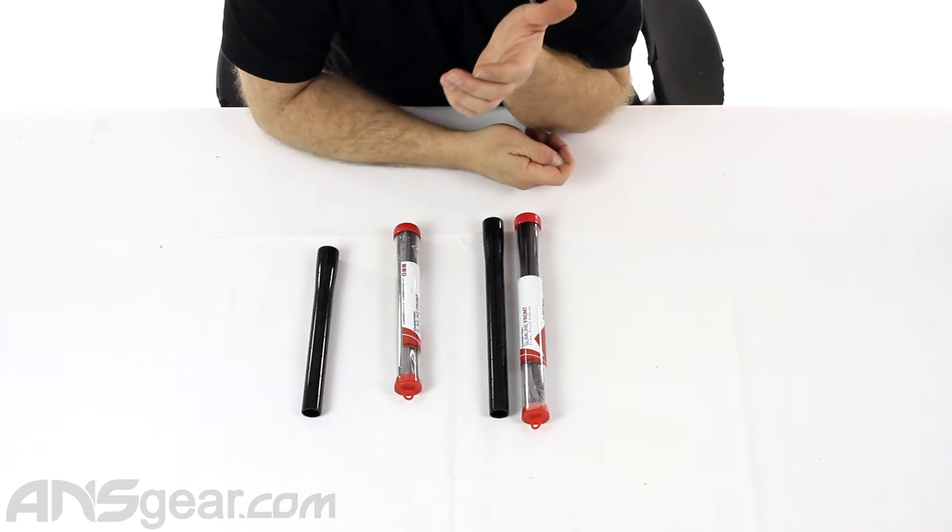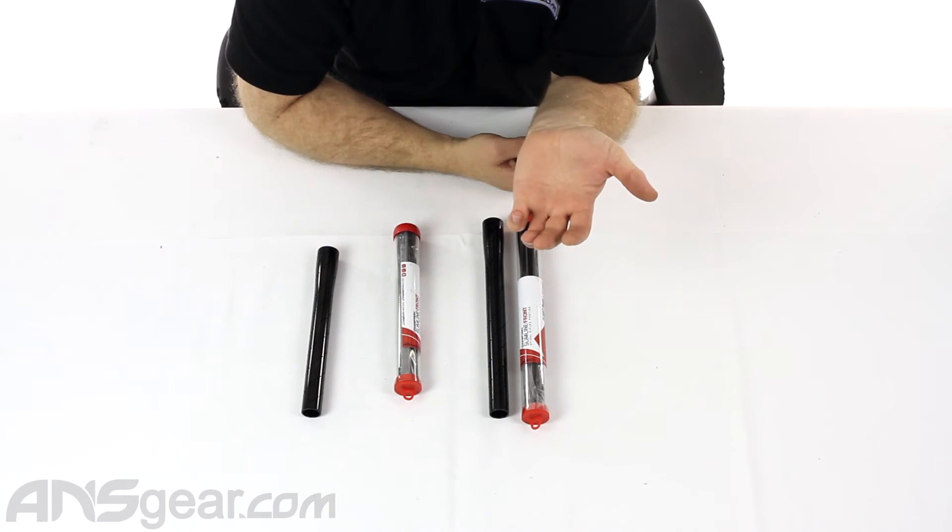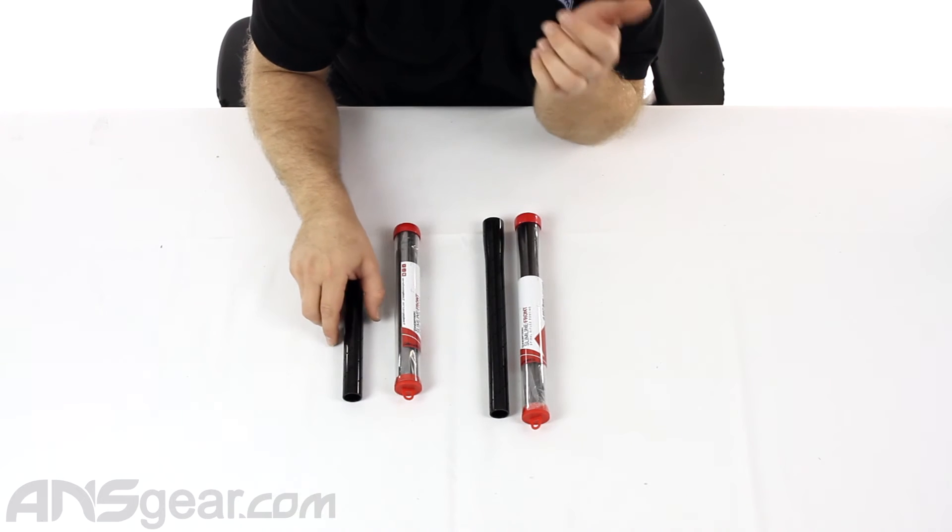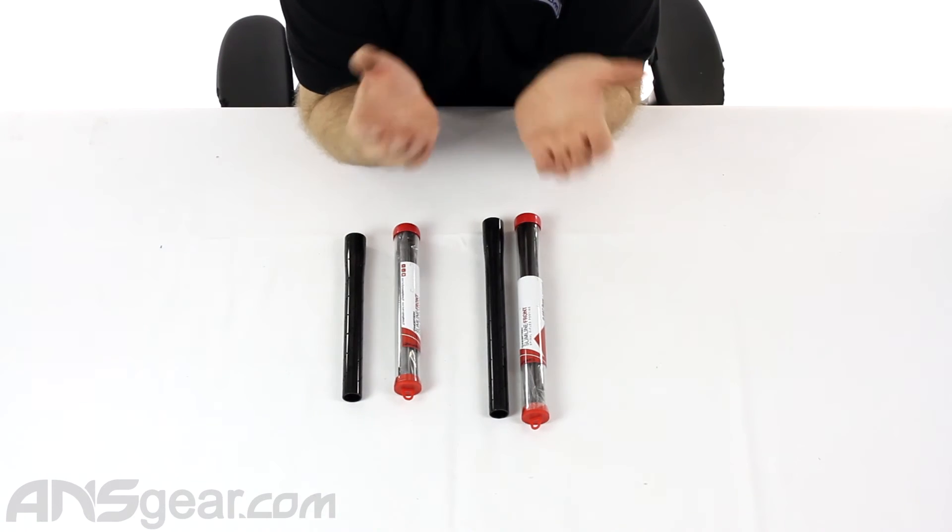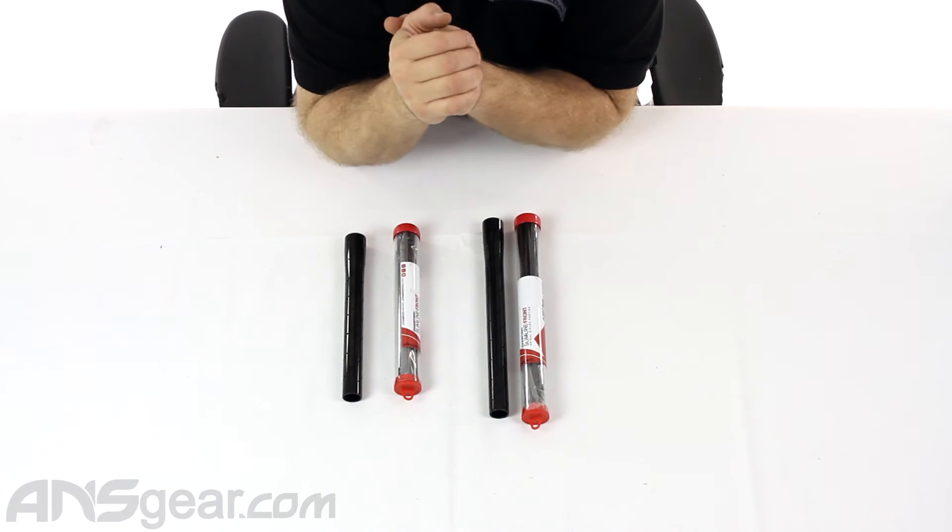If not, if you have a Freak system and you're only shooting under 689, then you can obviously run the 689 tip. Or if you're using a one-piece back that is a 689, you would run that tip as well.